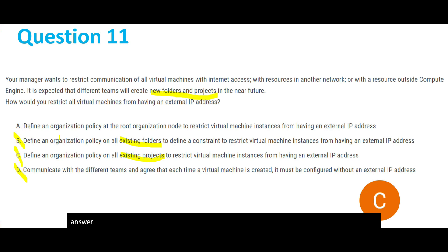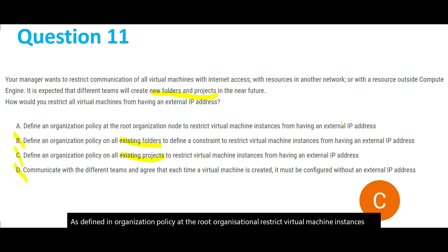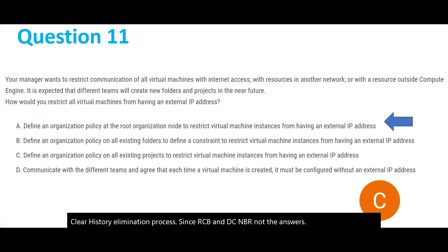A is to define an organization policy at the root organization node to restrict virtual machine instances from having an external IP address. That is the answer, clearly through the elimination process since D, C, and B are not the answers. So option A is the answer for question 11.